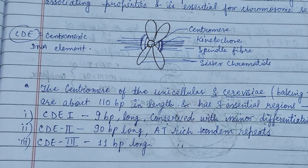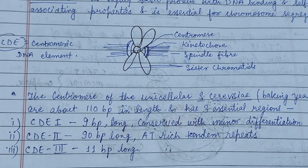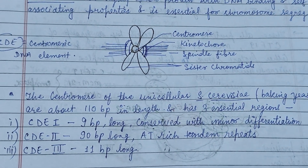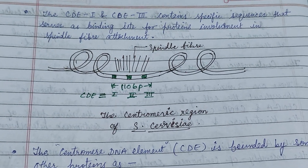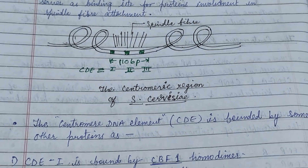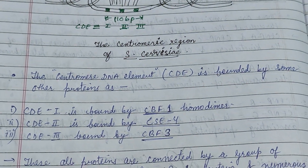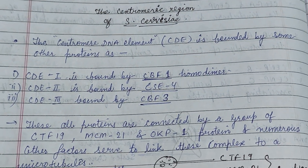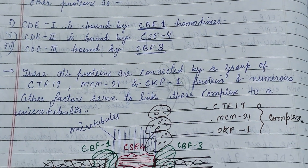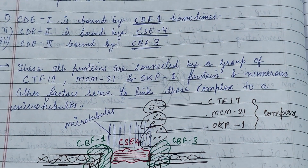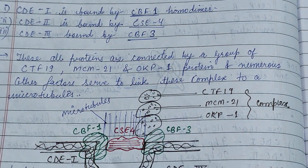The centromeric DNA elements, known as CDE, consist of CDE1, CDE2, and CDE3. These centromeric DNA elements are bound by specific proteins: CDE1 is bound by CBF1, CDE2 by CSE4, and CDE3 by CBF3, respectively.